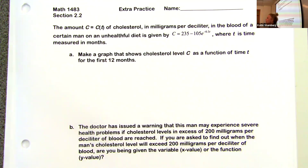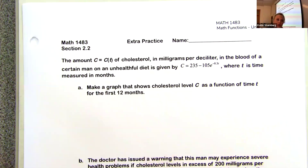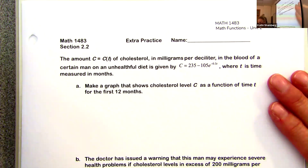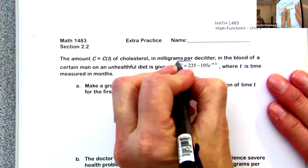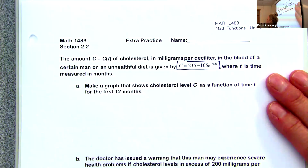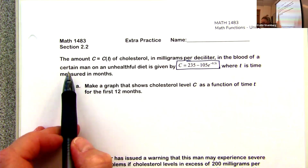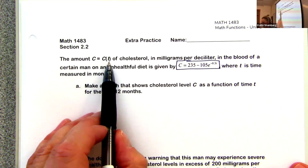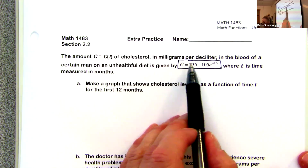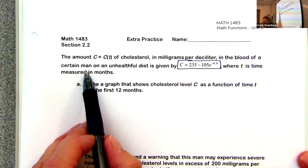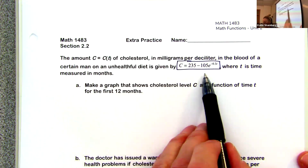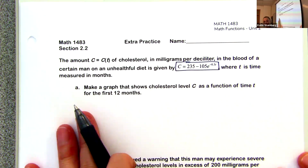On Wednesday we were entering information so we could graph the function. I asked you to go ahead and put this equation into your calculator. 2.2 has already been scheduled — it's due tonight. We're just finishing this up and then we're going to get into 2.3. The amount C equals C(T) is cholesterol measured in milligrams per deciliter in the blood of a certain man on an unhealthy diet. T is time measured in months.